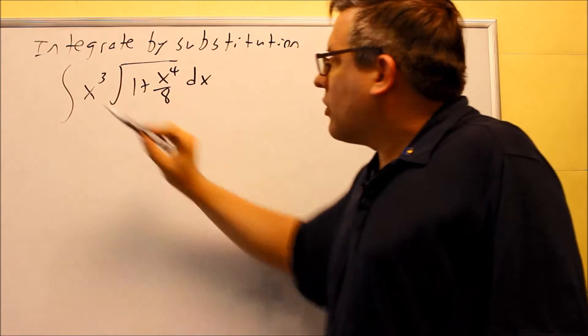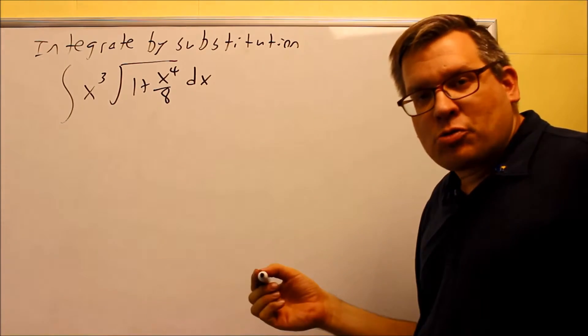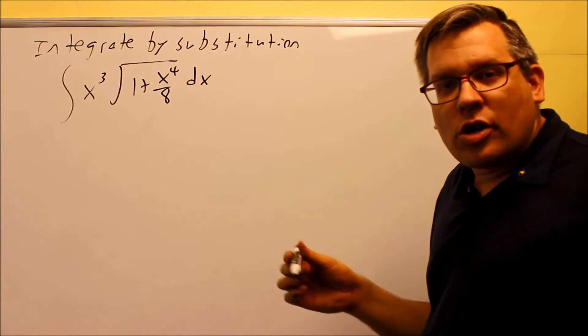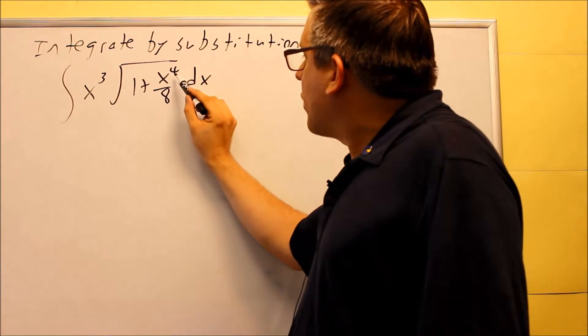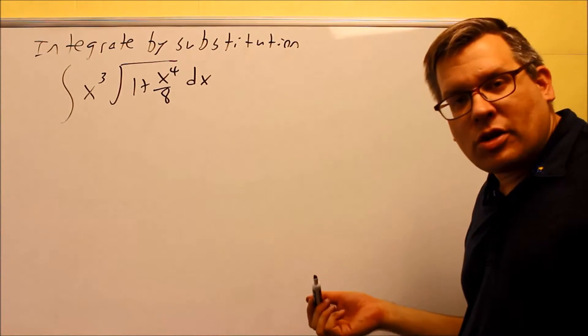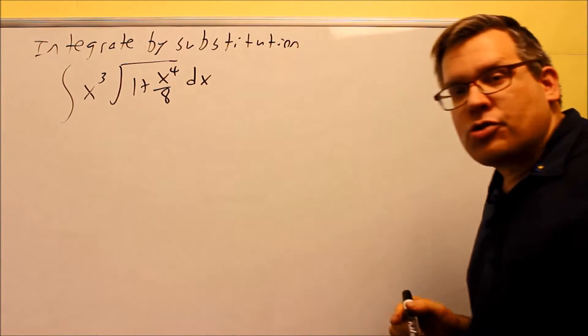is notice on the outside we have a smaller power. Whenever you take the derivative, you're always subtracting one from your exponent, so that's kind of another way you can tell where the u is. This one here, if I subtract one from the fourth power, I'll get a cube, and so that's another way you can tell what your u should equal.